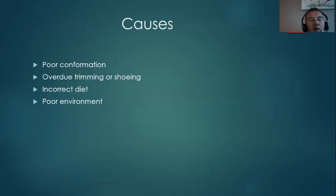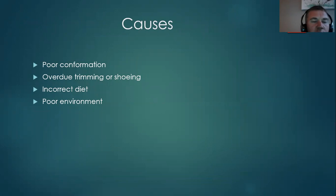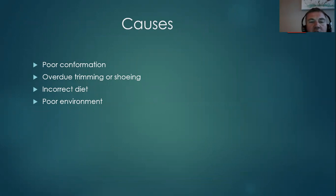This can be caused by poor conformation such as long sloping pasterns and a camped-out appearance. If horses are left too long between trimming or shoeing cycles, they can go extremely long and there's extra strain on the heels. Every centimetre of toe growth creates extra force upon the flexor tendon structures, which pass over the navicular area and attach onto the semilunar line of the distal phalanx, causing heels to crush further as well.